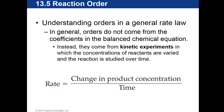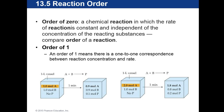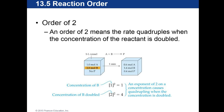The rate equals the change in product concentration over time. An order of zero is a chemical reaction in which the rate is constant and independent of the concentration of the reacting substances. First order means there is a one-to-one correspondence between the reactant concentration and rate. Second order means the rate quadruples when the concentration of the reactants is doubled.